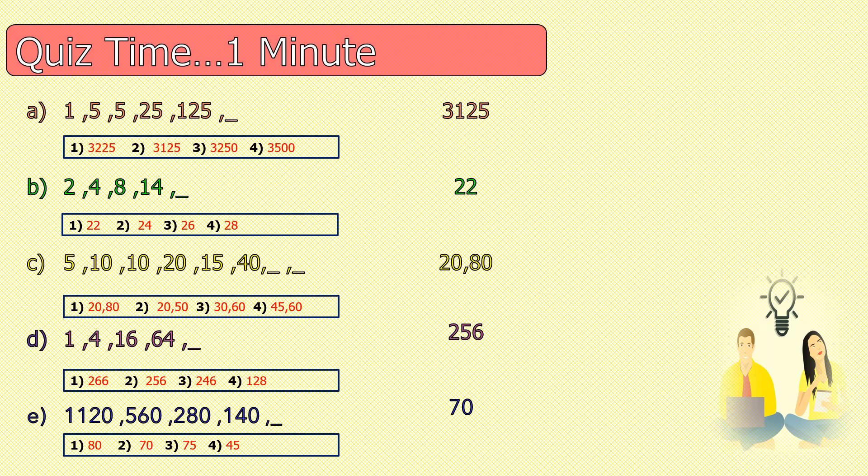For question B, it's an increasing difference. So: 2+2=4, 4+4=8, 8+6=14, and 14+8=22. For question C, we have two series mixed. One series starting from 5: 5, 10, 15, 20 — a difference of 5, so the first answer is 20. Another series: 10, 20, 40, 80 — numbers are doubling every time.